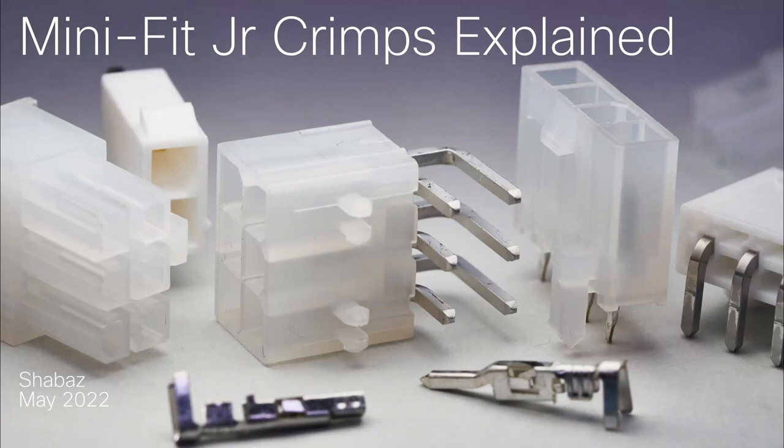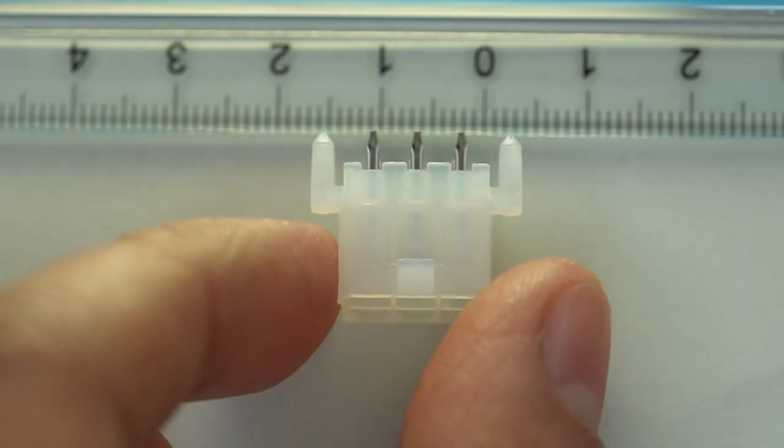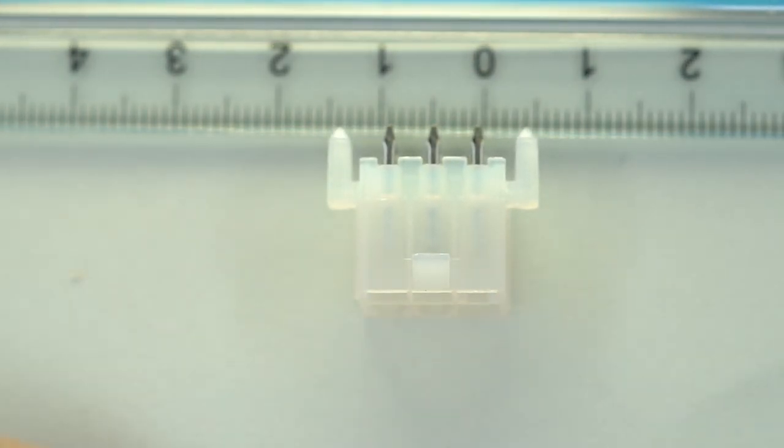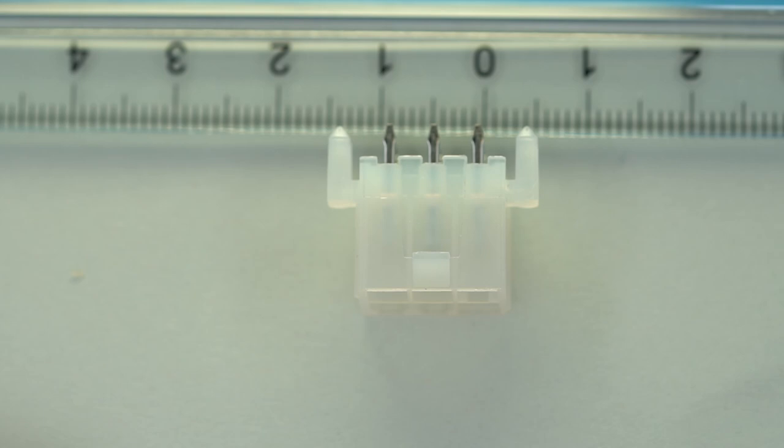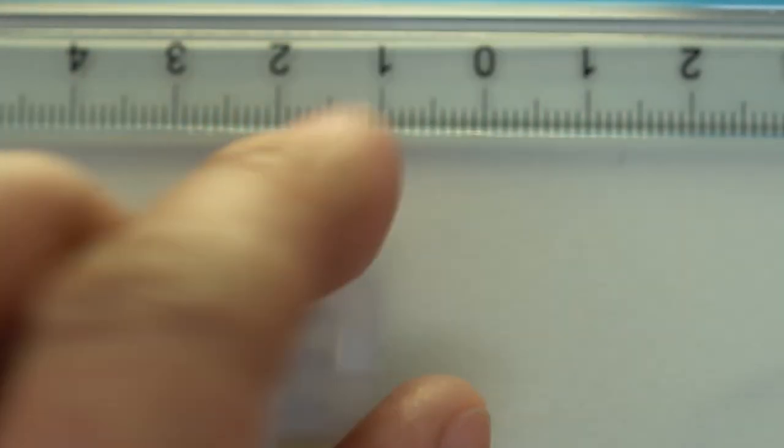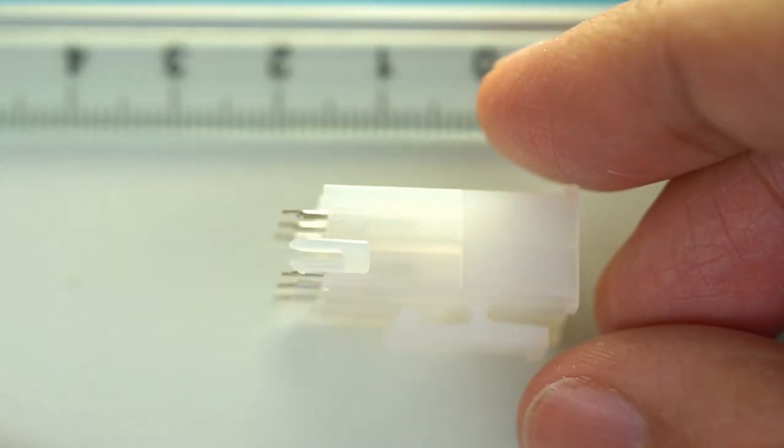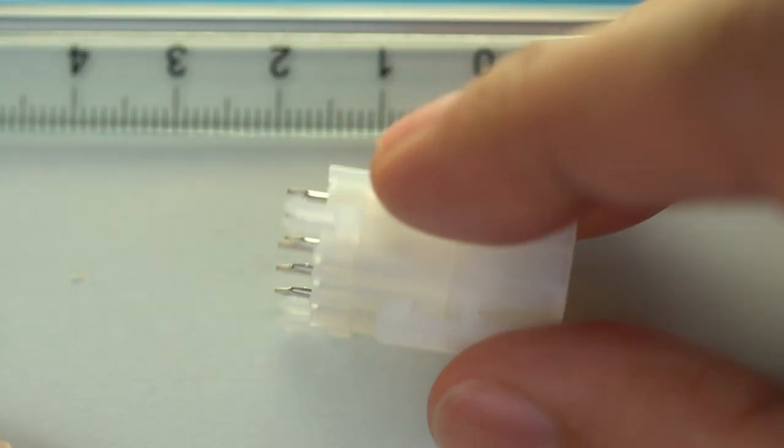Hi, this video explores Minifit Junior, or Minifit JR, connectors and crimps. They have a 4.2mm pitch, which to me is a sweet spot for power connectors for a variety of equipment. I like that the connectors are not crazy tiny, they are finger-sized for a typical amount of power supply conductor connections. And these connectors have been around for decades and are really low cost.